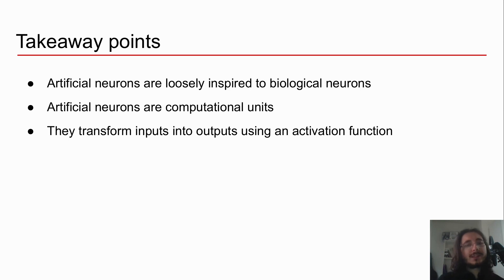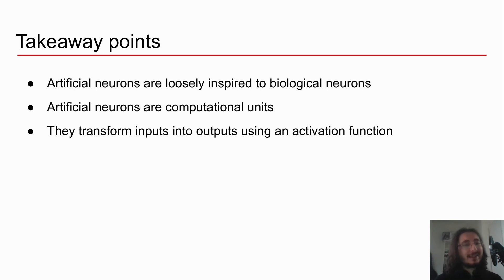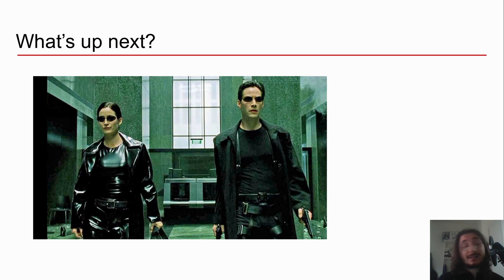Some key takeaways: artificial neurons are loosely inspired by biological neurons. Neurons are computational units that receive certain inputs, modulate them, and using an activation function arrive at an output. Now we have an understanding of how these units of computation work. What's next? Before getting into neural networks themselves, we need to understand matrix and vector operations. If you enjoyed the video, please subscribe to the channel, leave a like, and see you next time.